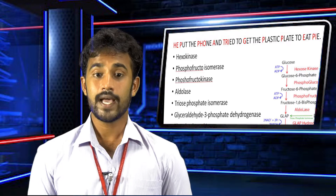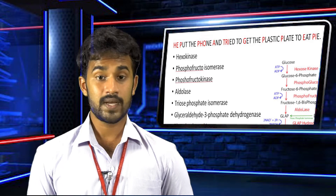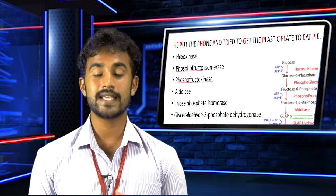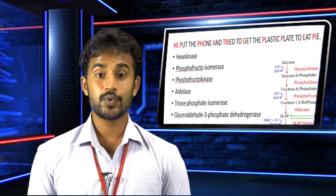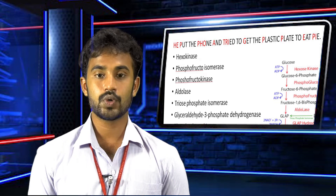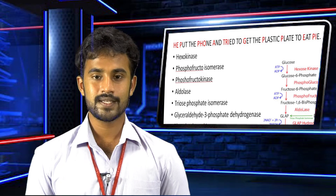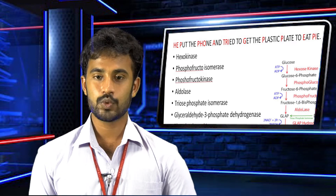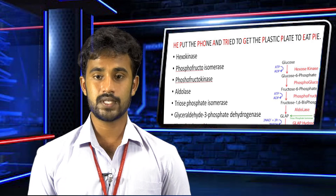Let's talk about the enzymes involved in the glycolysis pathway. The first enzyme is hexokinase — that is HE. Then P: phosphoglucose isomerase. Then PHO: phosphofructokinase. Then A: aldolase. Then TRI: triose phosphate isomerase. Then G: glyceraldehyde 3-phosphate dehydrogenase.